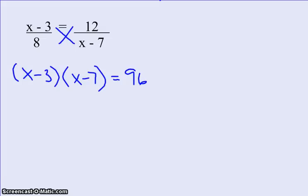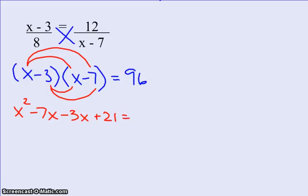Now my next step to figure out what x is, I'm going to have to clean up that left-hand side, so I'll have to FOIL: first, outside, inside, last. x times x gives me x squared, x times negative 7 is negative 7x, negative 3 times x is negative 3x. And when I multiply the lasts, negative 3 times negative 7 is positive 21. That whole thing equals 96.